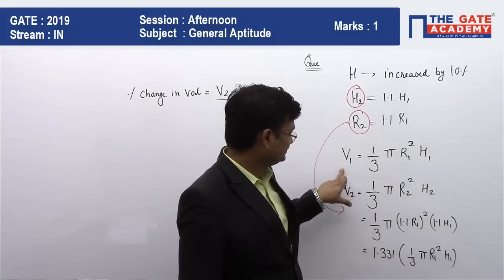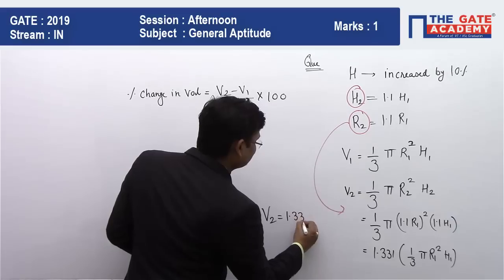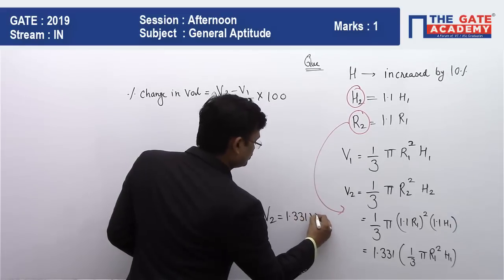If I simplify this I will get 1.331 × (1/3 π r1² h1), and this is also V1. So with this I can write V2 = 1.331 V1.